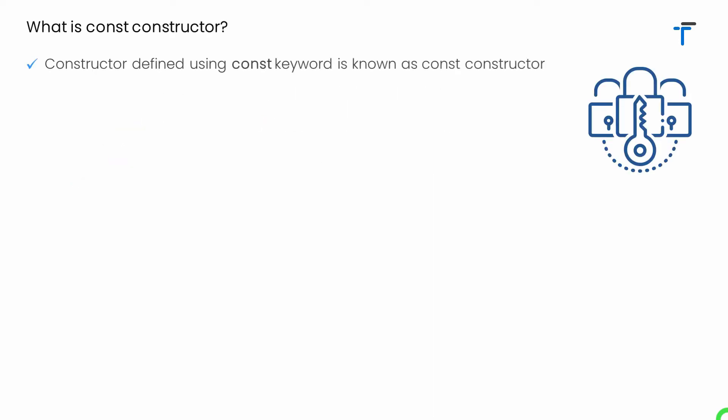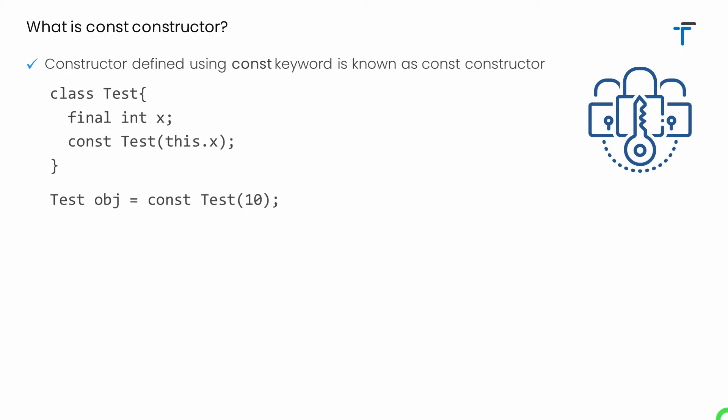Now let's talk about what the const constructor is. Basically, a constructor defined using the const keyword is known as the const constructor. The const keyword is used for a variety of purposes, and it is also possible to use the const keyword before defining a constructor. Whatever constructor we write with this const keyword is called the const constructor.